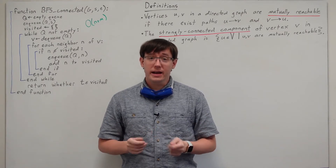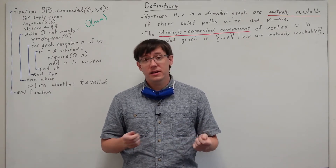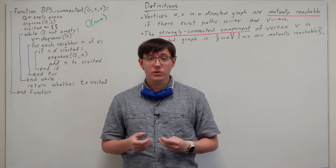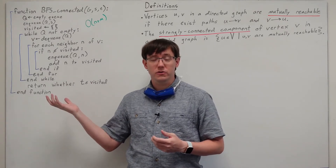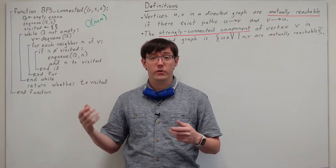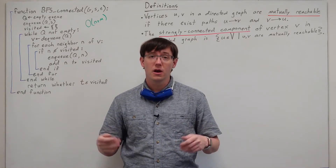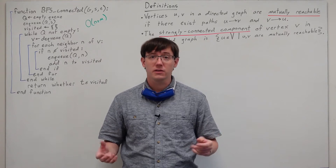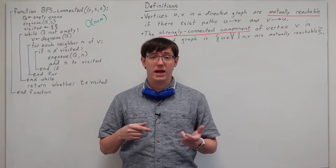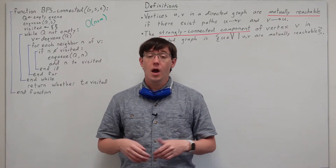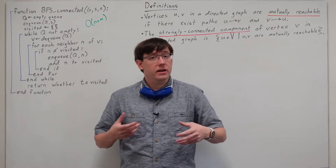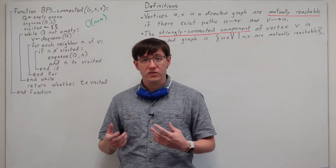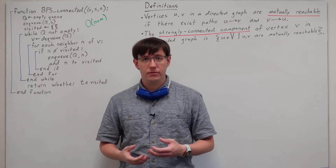In our last video, we defined connectivity and connected components in undirected graphs. In class, we saw how we could use breadth-first search to determine whether two vertices were connected or to find the connected component of a vertex in O(n+m) time. But when we defined connectivity and connected components, we said we would need to modify those definitions to make sense in directed graphs.